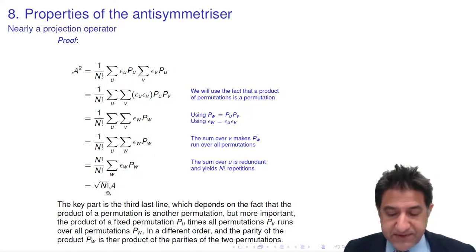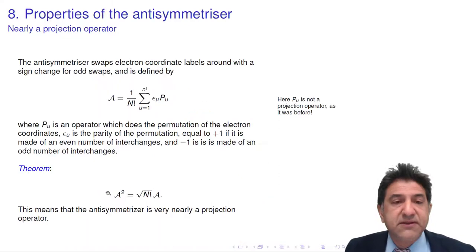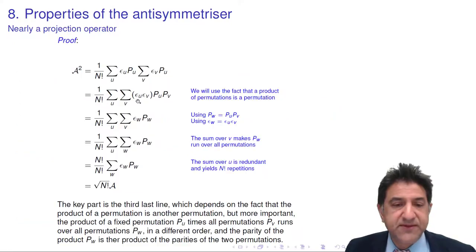Remember, from the previous definition over here, there is a square root of n factorial over here when there's a typographical error over here. So that proves the theorem.